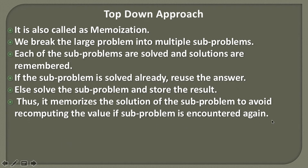It memorizes the solution of the sub-problem to avoid recomputing when the value of that sub-problem is encountered again. Friends, in our previous lecture, we also saw that when we are doing recursion, we can solve problems by breaking them down into multiple sub-problems. And if those sub-problems are encountered again, instead of recalculating them, we simply store the solution. When those sub-problems are encountered again, we use those stored solutions rather than computing them again. This brings an optimization to our recursion. Here we'll see a program to find the nth Fibonacci number using the top-down approach.